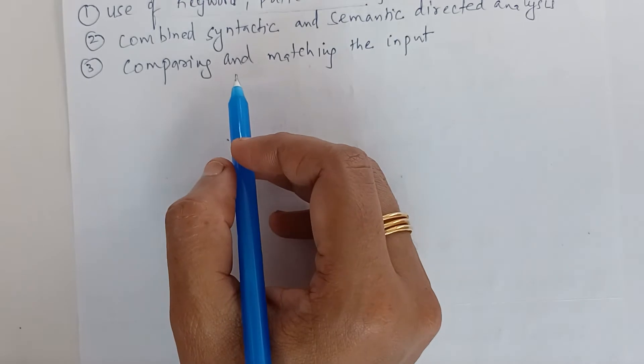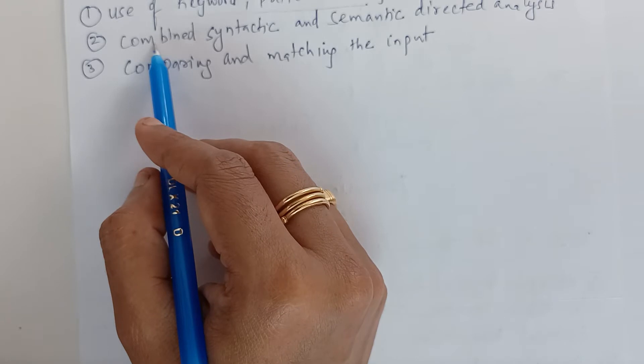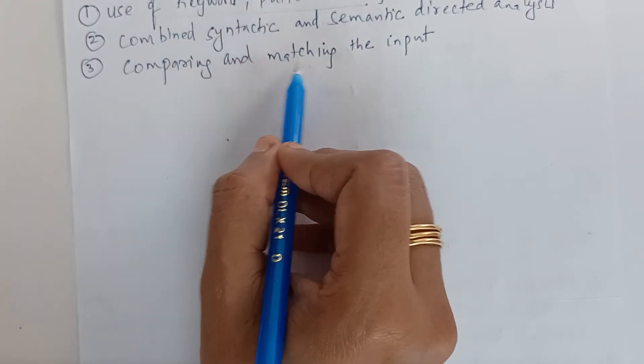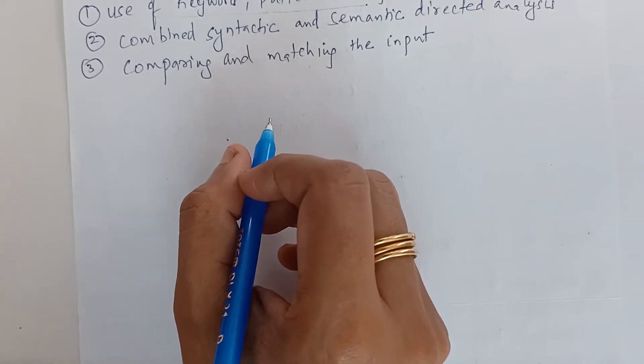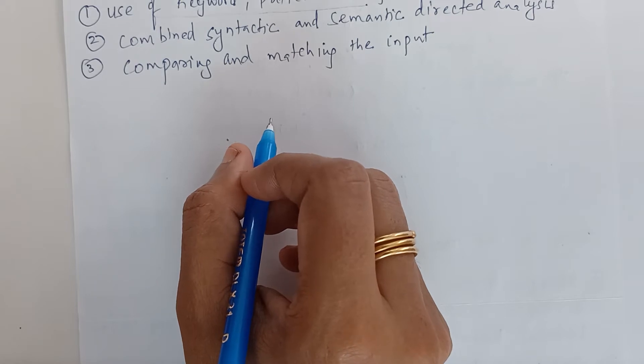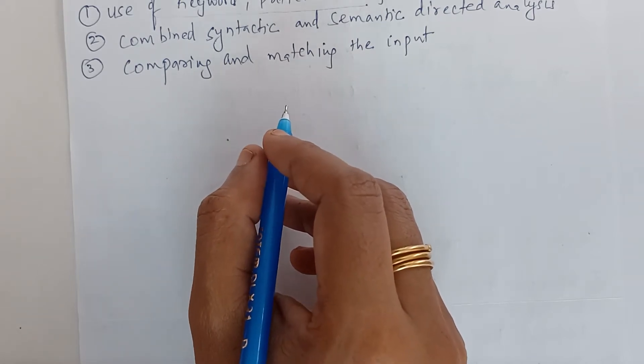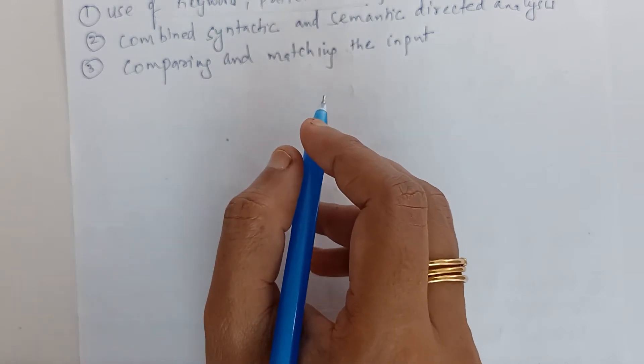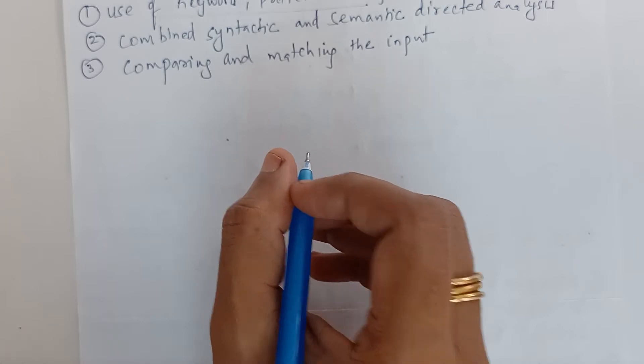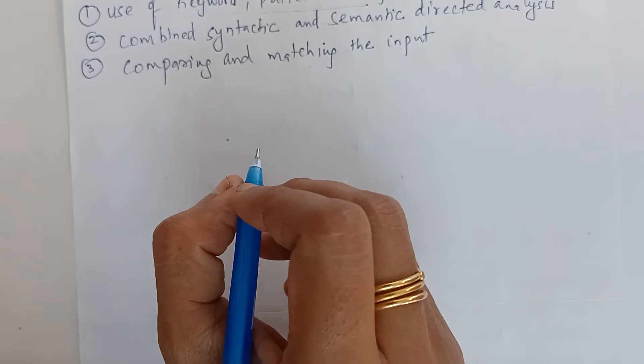The third approach is the use of structures such as frames and scripts. This is relying more on mapping of the input to the prescribed primitives which are used to build larger knowledge structures. It uses the constraints that are imposed by the context and the world knowledge to develop an understanding of language inputs.